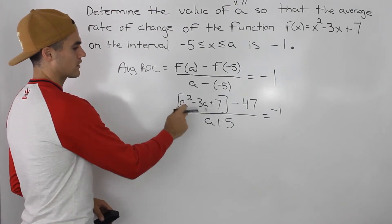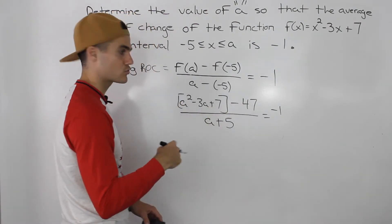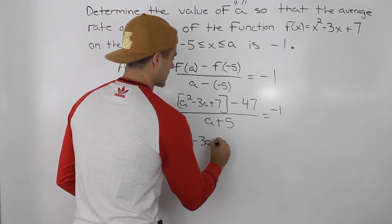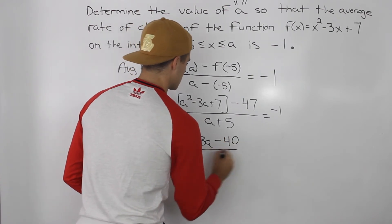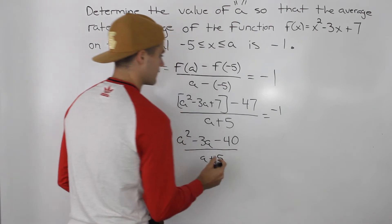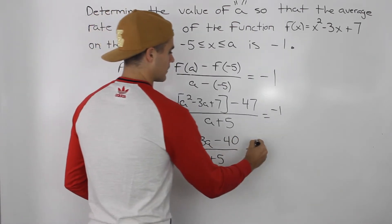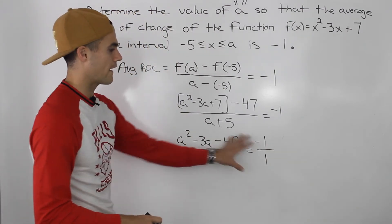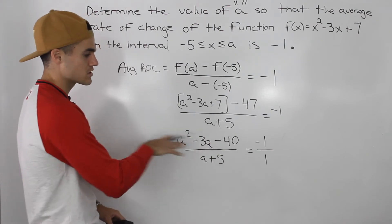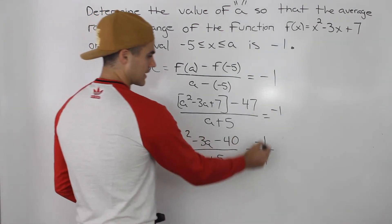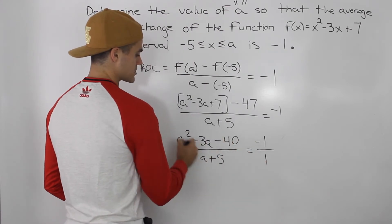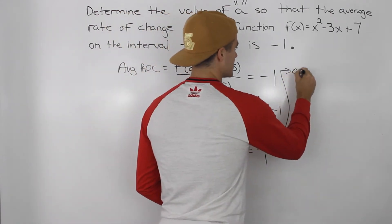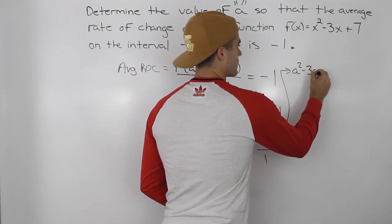Notice how the numerator can simplify — the 7 and negative 47 are like terms — so we'll have a² - 3a, and 7 minus 47 is negative 40, all over a + 5. We'll put the negative 1 over 1, because we have one fraction on each side of the equal sign so we can cross multiply. 1 times this expression gives us a² - 3a - 40.